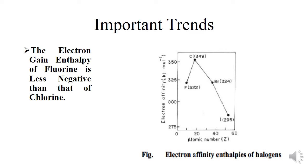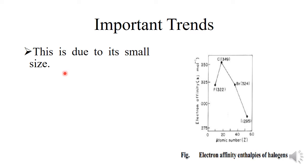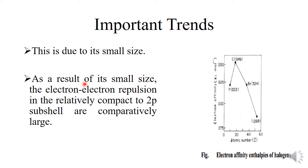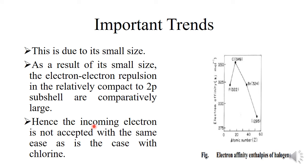Why is it so? This is because of fluorine's small size. As a result of its small size, the electron-electron repulsion in the relatively compact 2p subshells of fluorine is comparatively large. Hence, the incoming electron is not accepted with the same ease as in the case of chlorine. In chlorine, because of less electron-electron repulsion, the electron is easily accepted.